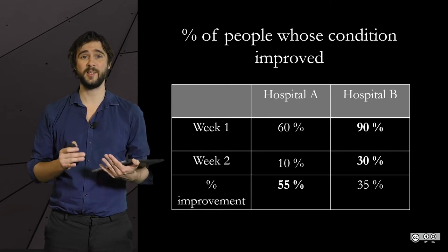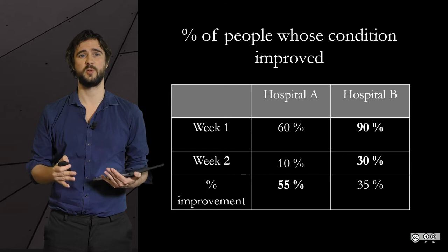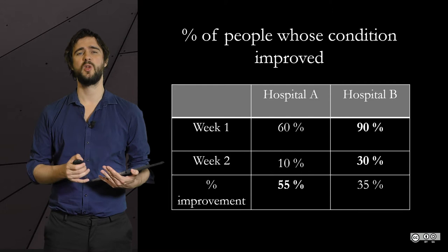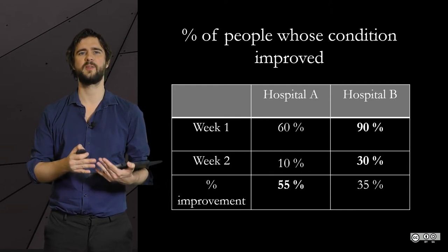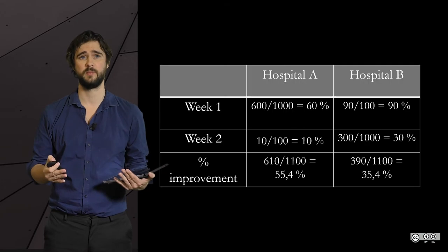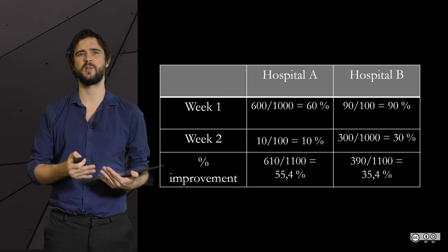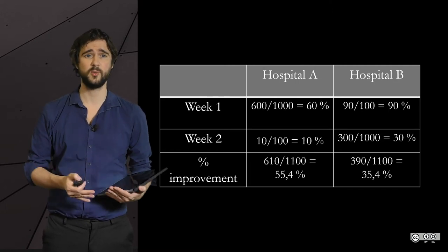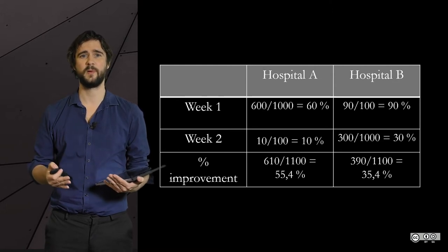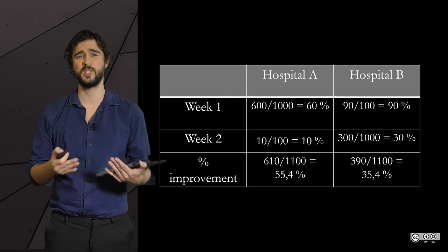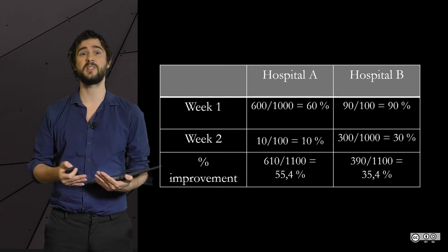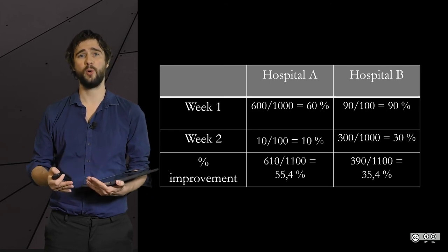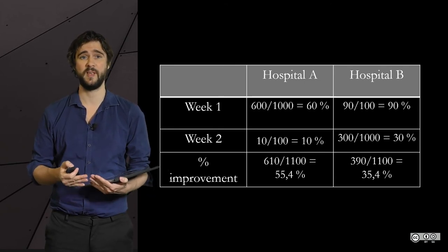What happened is that you cannot rely only on percentages to make decisions. You need to have the exact numbers of patients for each week and for each hospital. During the first week, when Hospital A had a 60% improvement, it was over 1,000 patients, while the 90% of Hospital B was only over 100 patients. The number of patients received in the second week was very different, with Hospital B having many more admissions but performance not close to Hospital A's first-week results. Overall, when you sum up the numbers, the decision is clearly in favour of Hospital A.